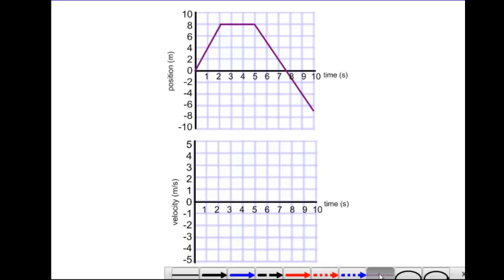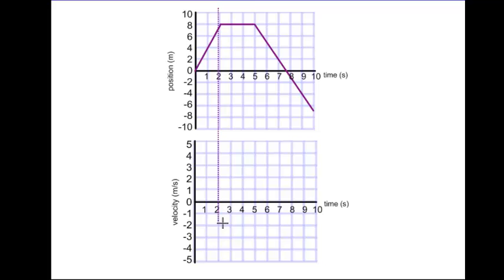So let's divide it up. I'll use a dotted line to keep separate these three segments. So we have the zero to two second mark, the two to five, and then the five to ten second marks. Let's look at the first segment.